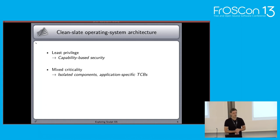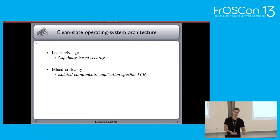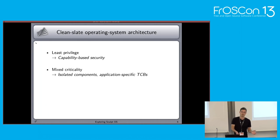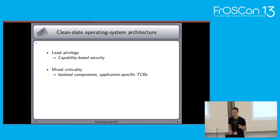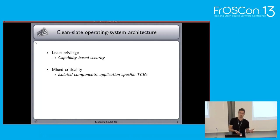Another point is mixed criticality: we have complex components we don't fully trust, and security-sensitive functions we also want to run on the same system simultaneously, without untrusted components being able to influence the security-critical functions. We can achieve this by strictly isolating each component and structuring the system so we can assess the application-specific trusted computing base — basically the amount of code a component or user has to trust for a program to fulfill its purpose, which in commodity systems can be quite large.